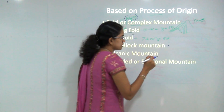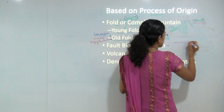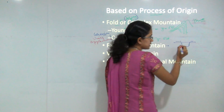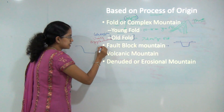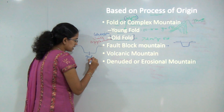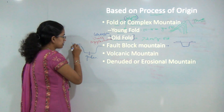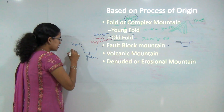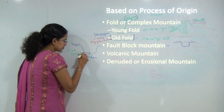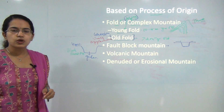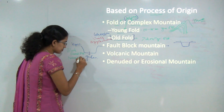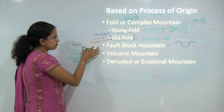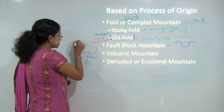To understand fault block mountains: if there is a surface and a thrust occurs, there would be subsidence of one portion. The subsided region is known as a graben, and the region left standing is known as a horst. This horst forms the mountain. Classic examples of horst mountains include the Black Forest mountains. These are examples of fault block mountains.